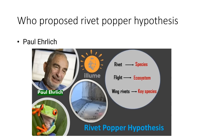The last question: who proposed the Rivet Popper hypothesis? The Rivet Popper hypothesis was proposed by Paul Ehrlich. This is a comparison used to describe ecosystem functioning.